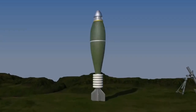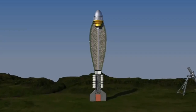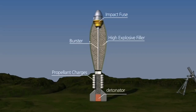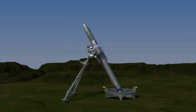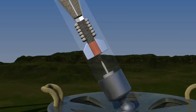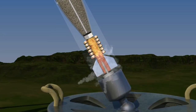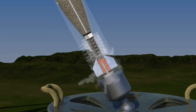Moving on to the mortar shell. So how is the mortar fired? There is a firing pin under the barrel. When the mortar shell hits the firing pin, the detonator activates and burns the charge.